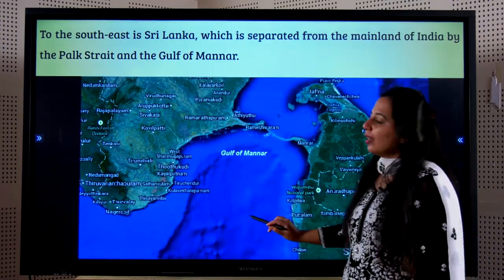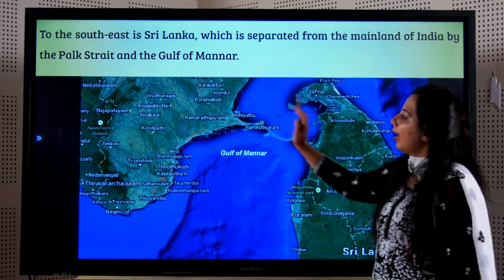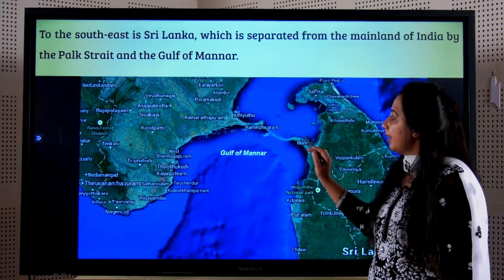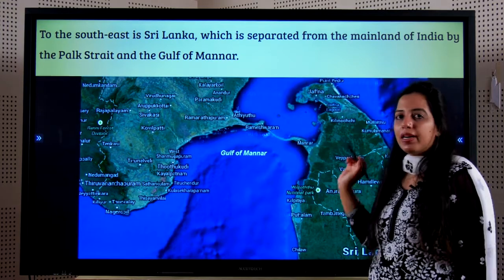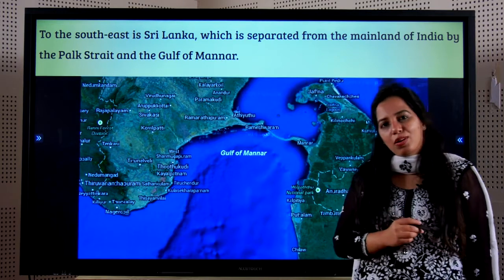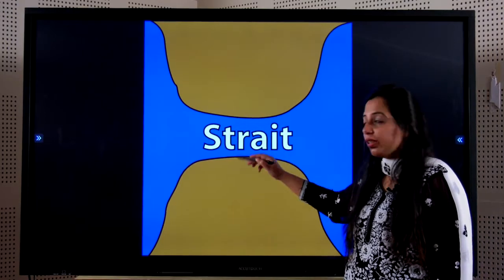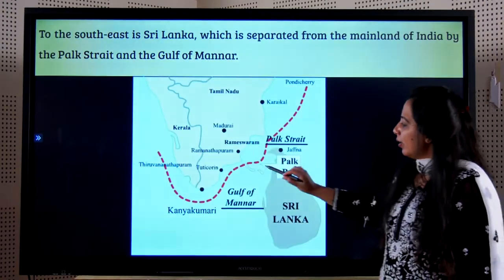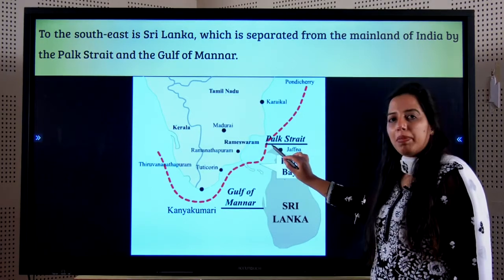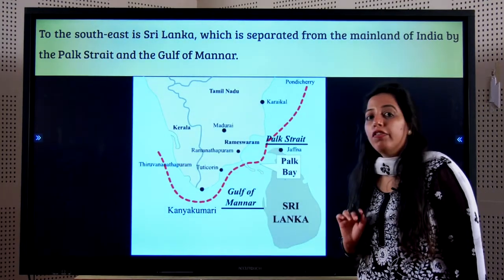When we go to the southeast, we have Sri Lanka. The land of India and Sri Lanka are separated by a strait called the Palk Strait and the Gulf of Manar. A strait is a narrow strip of water between two land masses, and this narrow strip of water between India and Sri Lanka is called the Palk Strait, with the water body called the Gulf of Manar.